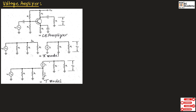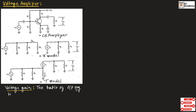To understand the voltage amplifier, let us consider common emitter amplifier and its AC equivalent circuits, which are represented by the pi model as well as the T model. We can define voltage gain in a voltage amplifier as the ratio of output voltage to input voltage.